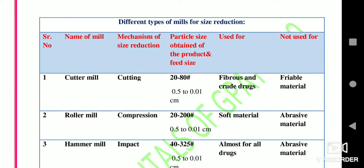Here is an important table of different types of mills for size reduction, showing: name of mill, mechanism, particle size obtained, materials used for, and materials not used for. First is the cutter mill — mechanism is cutting; particle size obtained is 20 to 80 mesh; used for fibrous and crude drugs; not used for viable drugs.